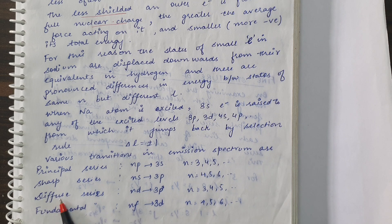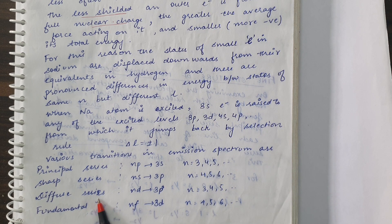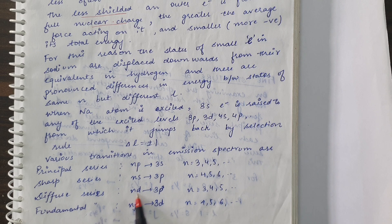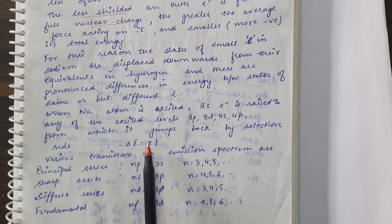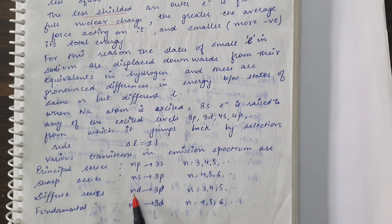The diffuse series includes transitions where the electron in the excited state is in a D state. The lowest D state is 3D. Transitions occur from ND → 3P, because only then ΔL = ±1 is satisfied. Here N varies from 3, 4, 5, 6, and so on.